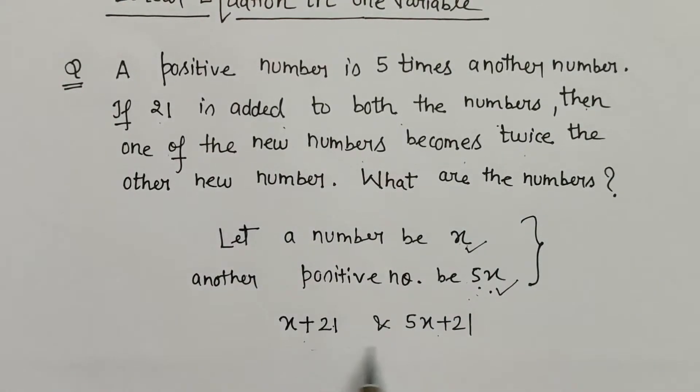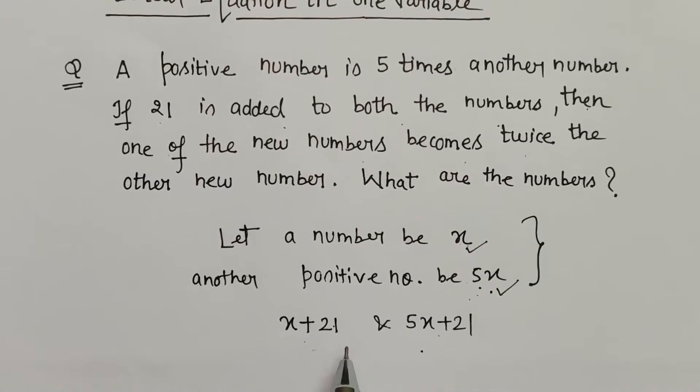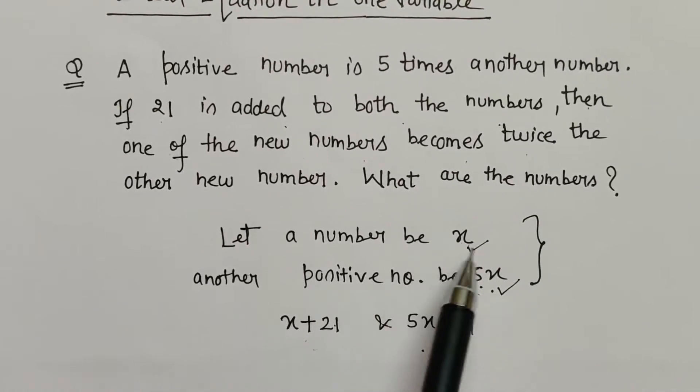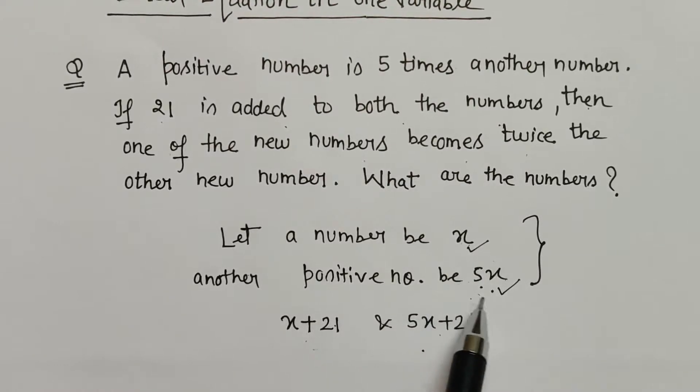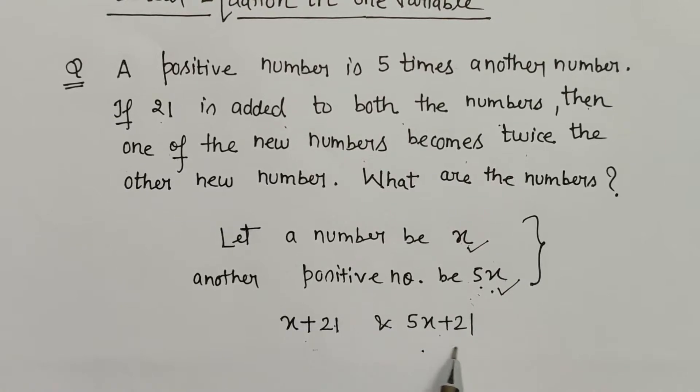So what does it indicate? One of the new numbers, so these are the new numbers. Which new number we have to take here that will be twice the other new number? Obviously the number which was bigger in the beginning itself, that will only be larger in value now also after adding the same value.